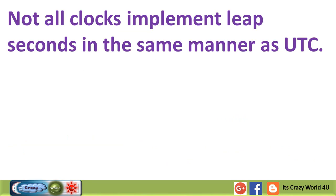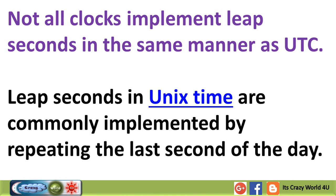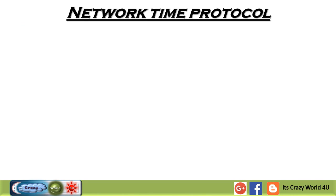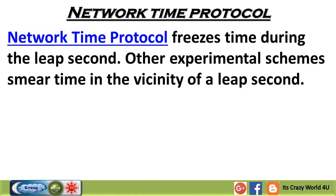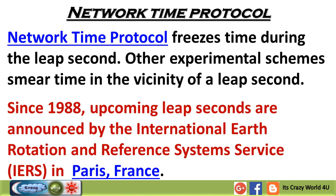Not all clocks implement leap seconds in the same manner as UTC. Leap seconds in Unix time are commonly implemented by repeating the last second of the day. Network Time Protocol freezes time during the leap second. Other experimental schemes smear time in the vicinity of a leap second. Since 1988, upcoming leap seconds are announced by the International Earth Rotation and Reference Systems Service, IERS, in Paris, France.